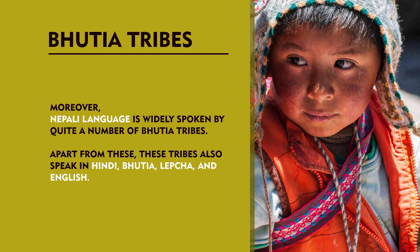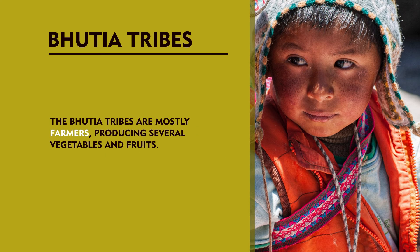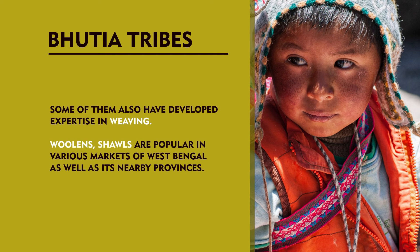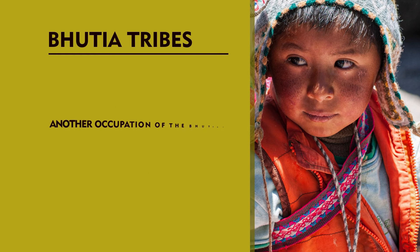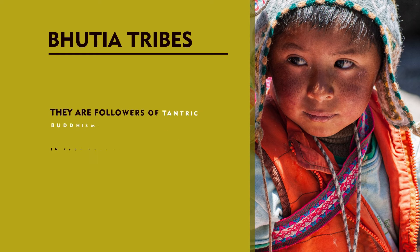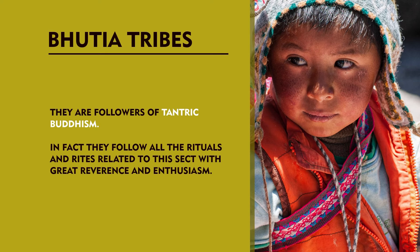The Bhutia tribes generally speak in Sikkimese language, which has got similarity with some foreign languages. Moreover, Nepali language is widely spoken by quite a number of Bhutia tribes. Apart from these, these tribes also speak in Hindi, Bhutia, Lepcha and English. The Bhutia tribes are mostly farmers producing several vegetables and fruits. Some of them have also developed expertise in weaving. Woolens and shawls are popular in various markets of West Bengal as well as its nearby provinces. Another occupation of the Bhutias is breeding yaks and sheep. They are followers of Tantric Buddhism. In fact, they follow all the rituals and rites related to the sect with great reverence and enthusiasm.